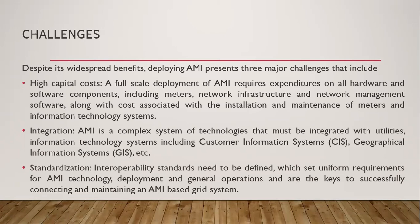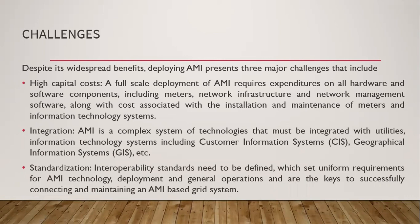Despite its wide range of benefits, AMI also has some challenges. The first is high capital cost, because to apply this concept on a smart grid we have to spend on hardware, software, and implementing smart meters, and also implementing two-way communication network infrastructure, which is very costly. The second challenge is integration, as it has to be integrated on both the customer side and the utility side. The third is standardization — all communication between customers and utilities has to follow the same standard.